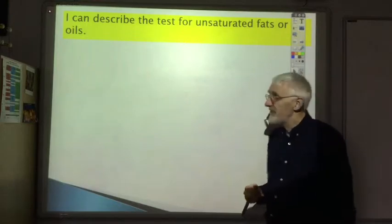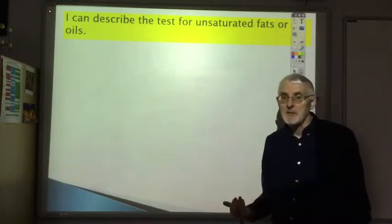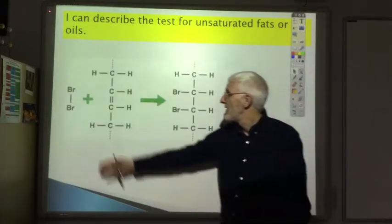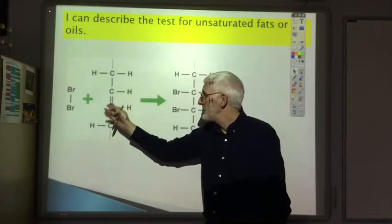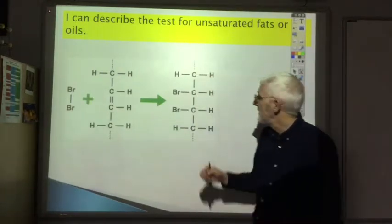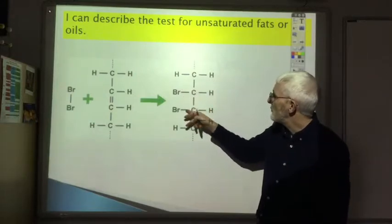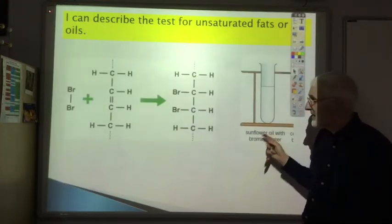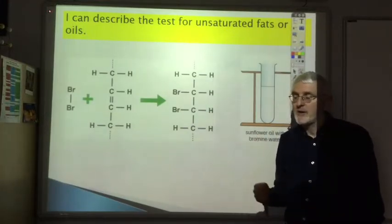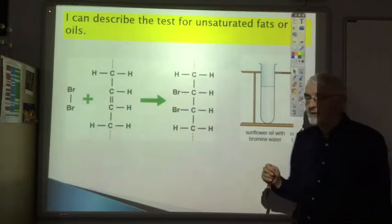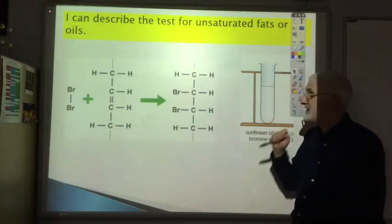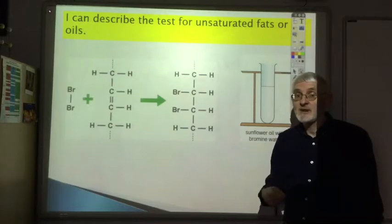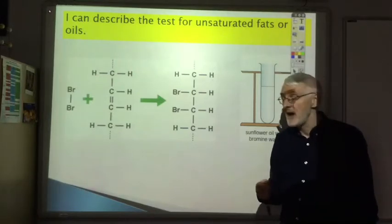I can describe the test for unsaturated fats and oils. It's the same as the test for any unsaturated compound - react with bromine water. If you have one double bond, it will react with one molecule of bromine. Break the double bond and one bromine goes on to each carbon. So sunflower oil is unsaturated, hence it's an oil at room temperature. Add some bromine water to it, shake it up - it will decolorize the bromine water due to this reaction. You can measure the extent of the unsaturation by seeing how much bromine the oil will decolorize.